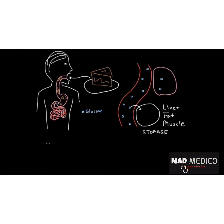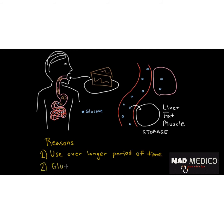So the first reason to store glucose is so you can use it over a longer period of time — maybe you won't have another piece of cake for a while, so it's good to have stored glucose to draw on later. There's actually a second reason to get glucose out of your blood: glucose is toxic in high quantities. A piece of cake will give you a lot of glucose, and in high quantities it can damage your body. That's why you want it in storage cells, which can handle it, rather than leaving it in circulation where it might damage nerve cells like brain cells.